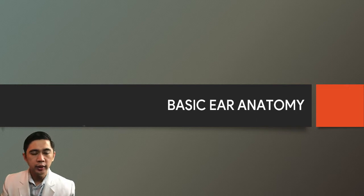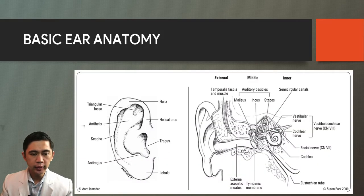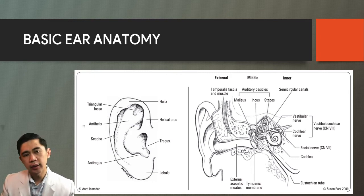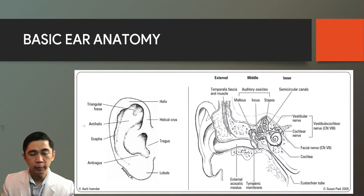We will start with basic ear anatomy. In this slide, we'll see the pinna or the auricle and its parts. We have the helix, the outer fold, which goes downward to make up the lobule. There's also an inner fold called the anti-helix, and we have a part anterior to everything called the tragus. Just behind the tragus is the opening to the external ear canal, also called the external acoustic meatus, which leads to the tympanic membrane or the eardrum.